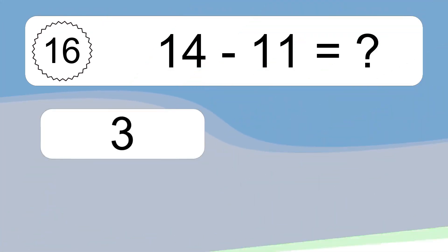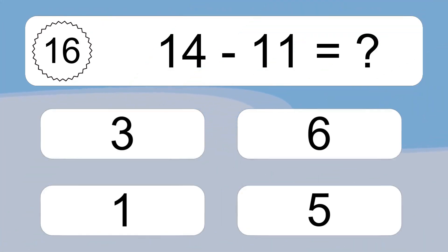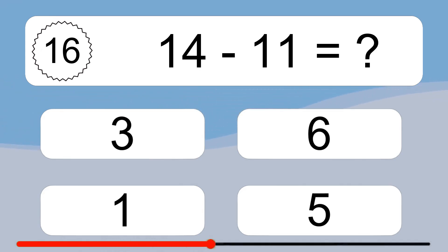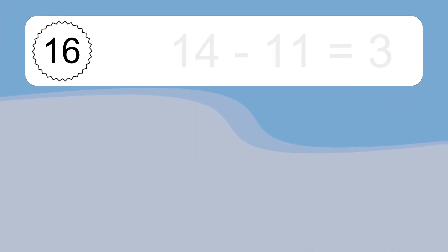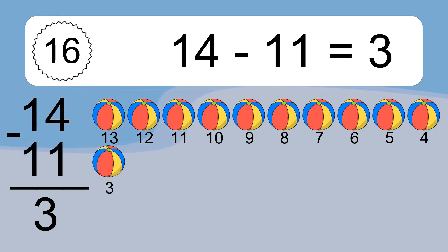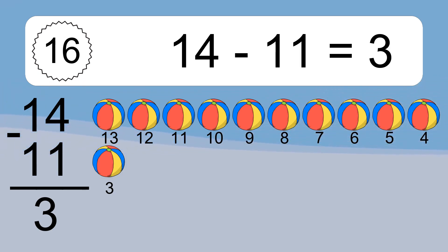14 minus 11 equals what? 14 minus 11 equals 3. Let's count it: 13, 12, 11, 10, 9, 8, 7, 6, 5, 4, 3.